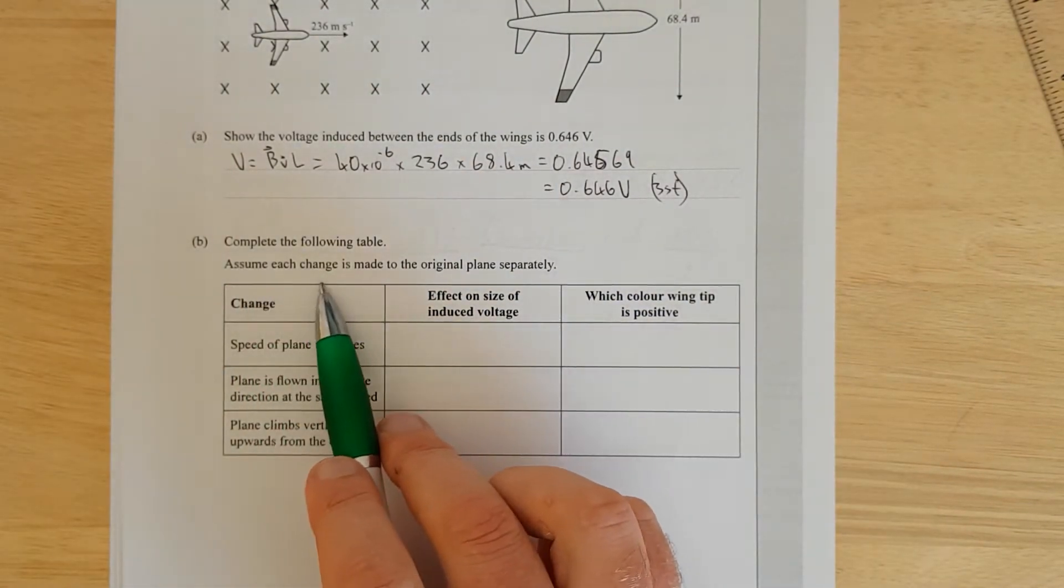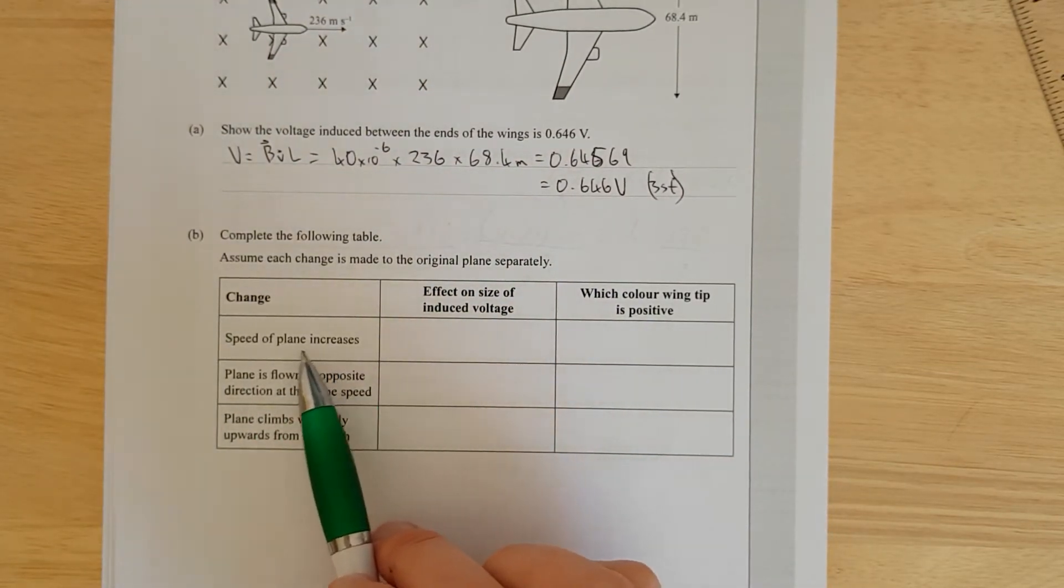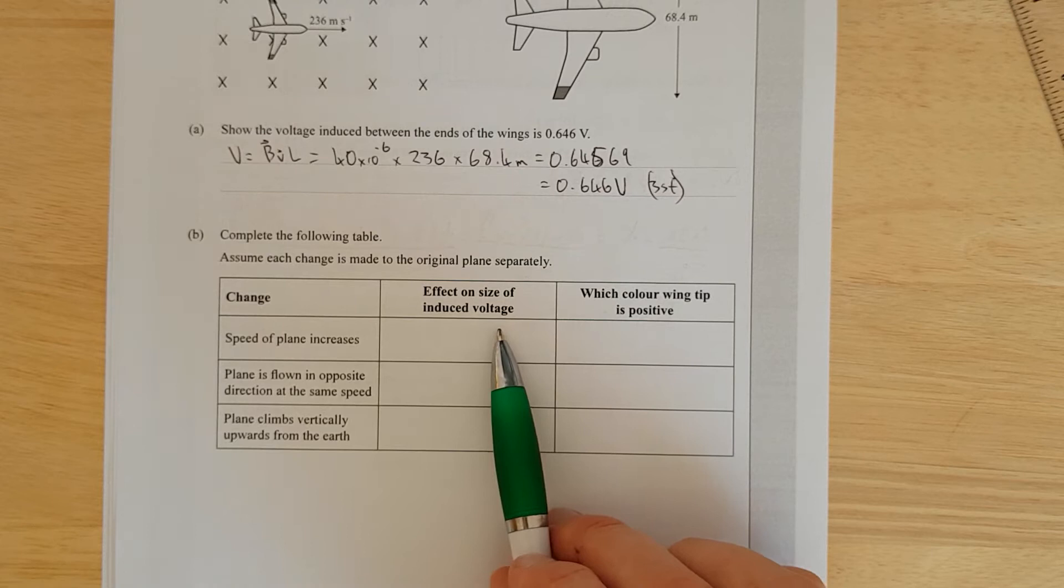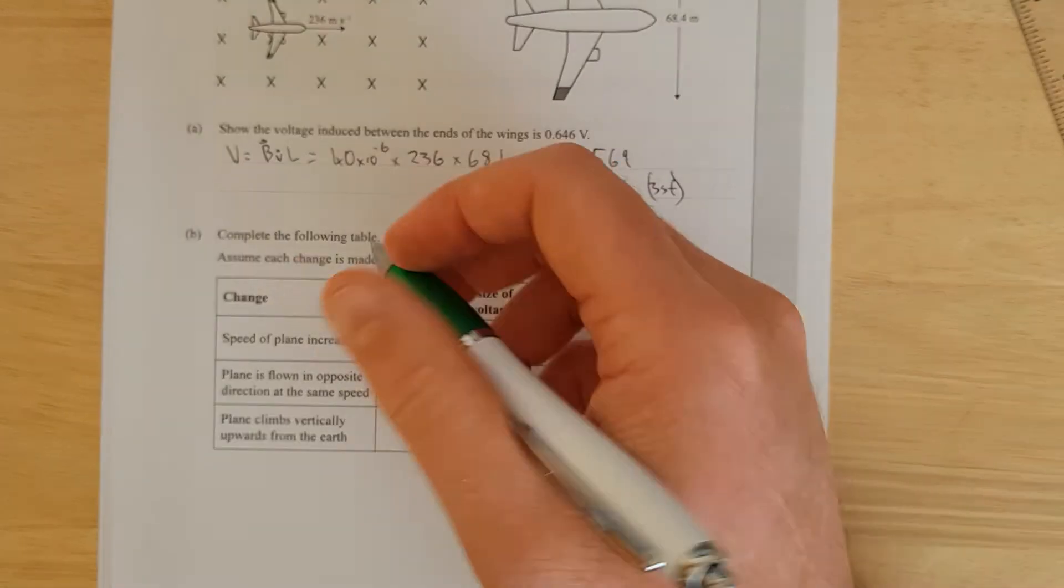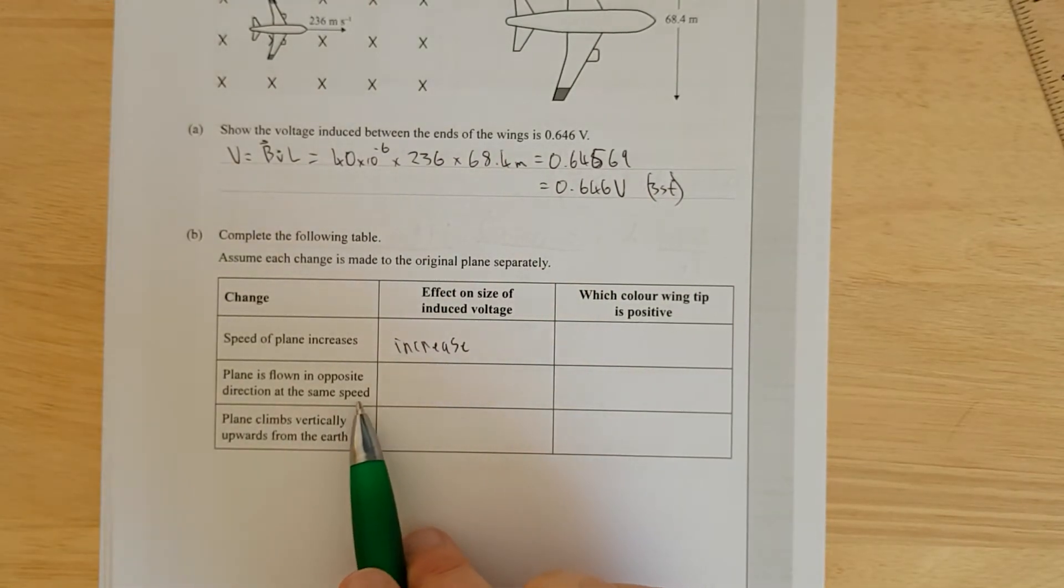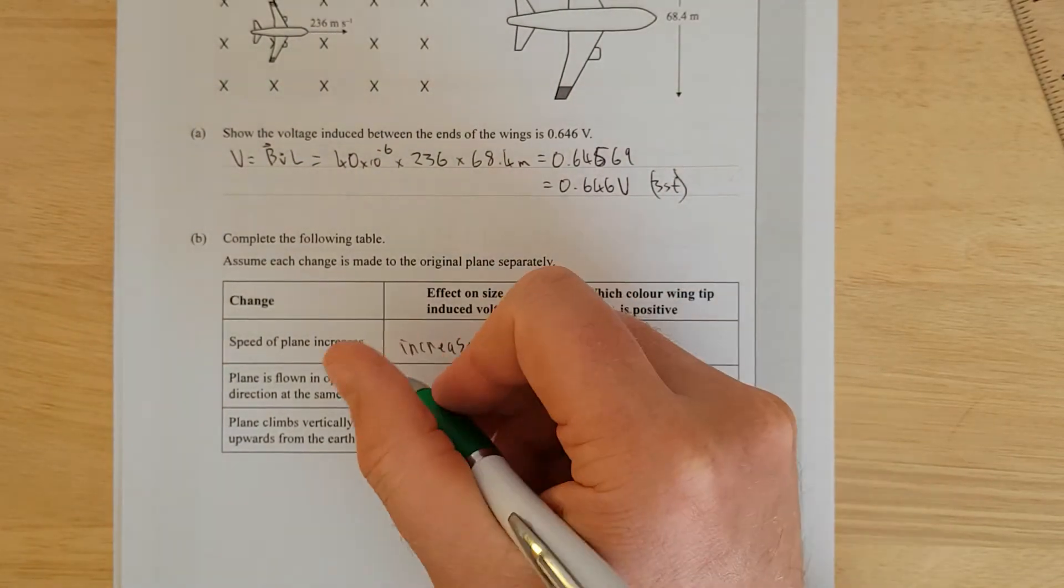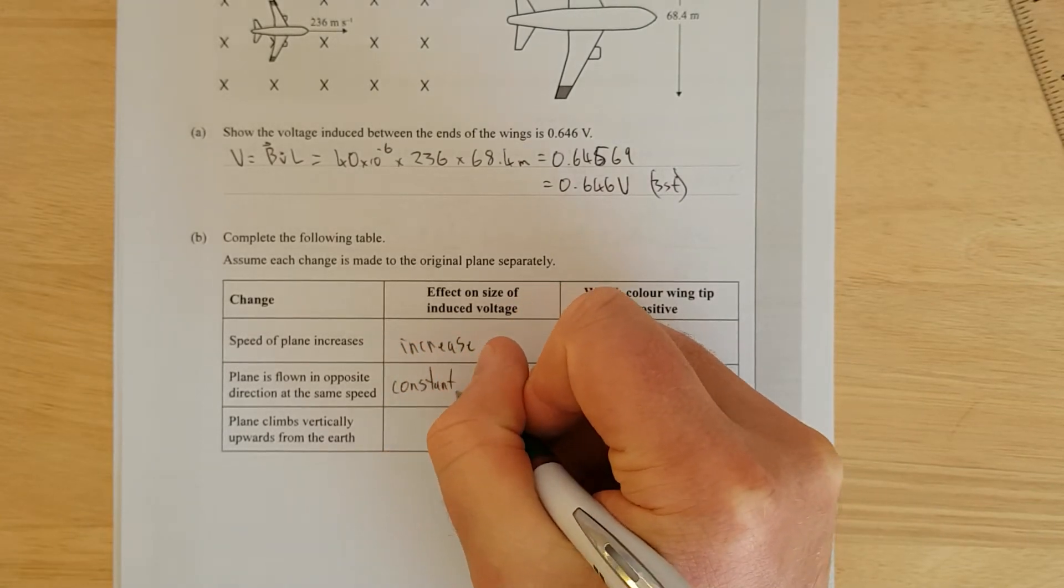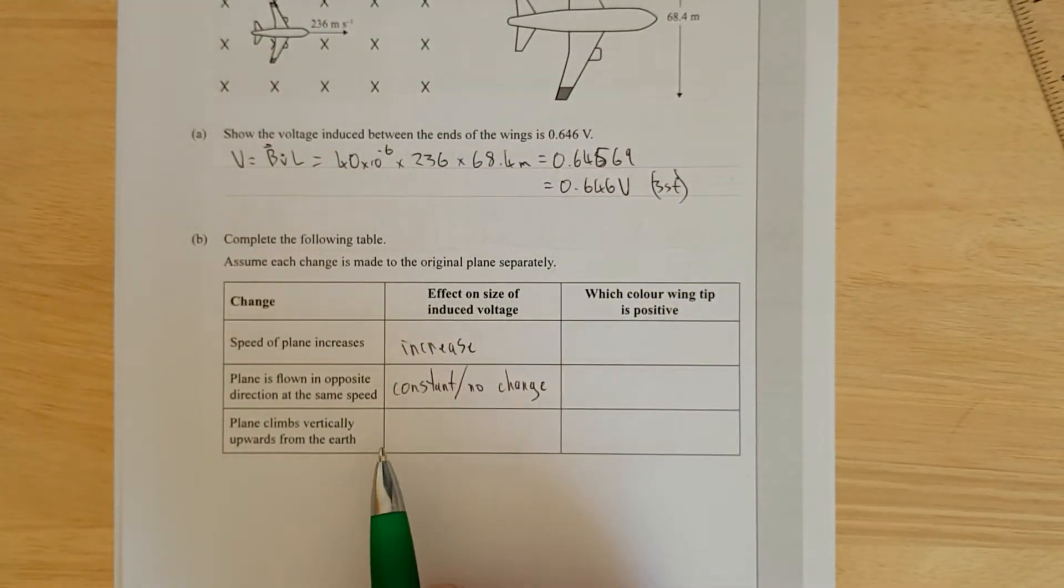Complete the following table. Assume each change is made to the original plane separately. If the speed of the plane increases, the voltage is going to increase. Plane flying the opposite direction at the same speed - that's just constant. It's only asking the size, not the direction.